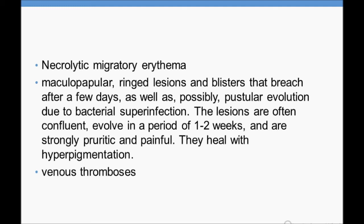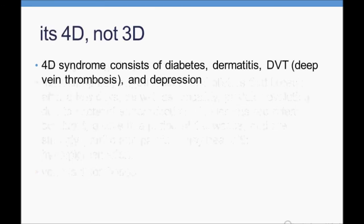Another very important point: venous thrombosis — DVT — can occur in a patient with glucagonoma. This is part of the 4D syndrome associated with glucagonoma. The 4D syndrome consists of: Diabetes, Dermatitis, DVT, and Depression.